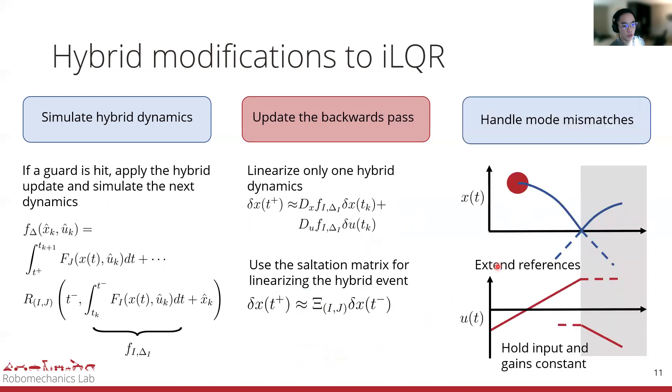Lastly, since the hybrid transition can move around due to simulating a new control law each iteration, an issue may occur when the current hybrid mode does not match the reference. This issue can be locally patched by extending the references to ensure there's a reference for the correct mode. And for the input, we can just hold the input and gains constant during this time.